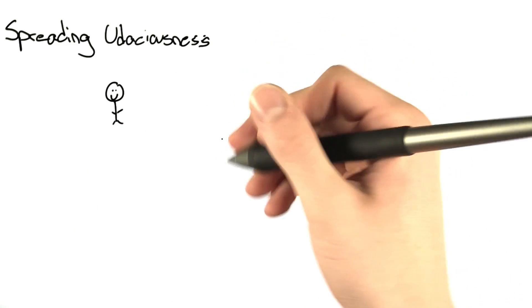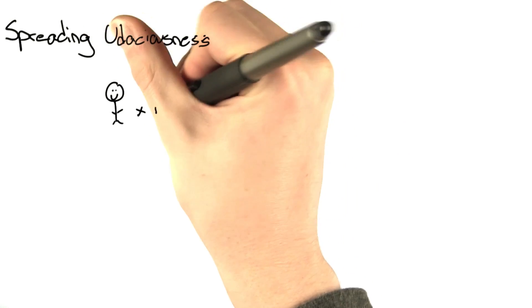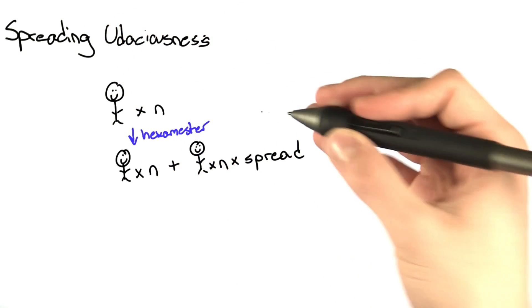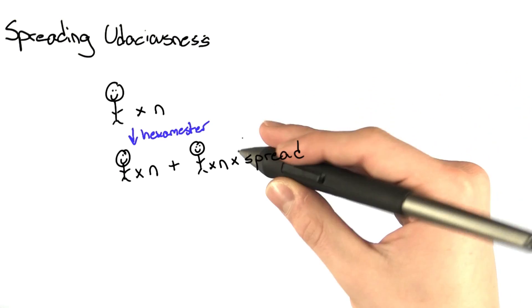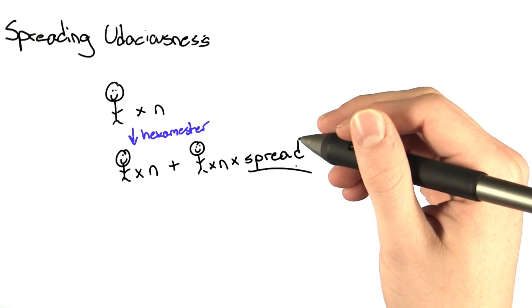In this problem, we start out with n number of people. After every hexamester, each one of our happy Udacians goes out and asks spread number of their friends to also take the course.